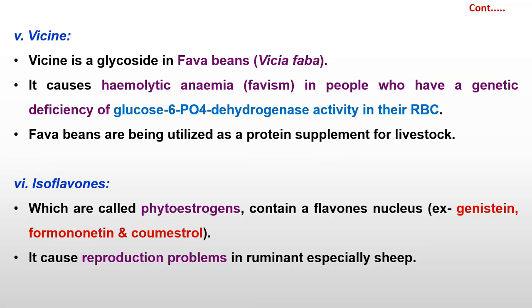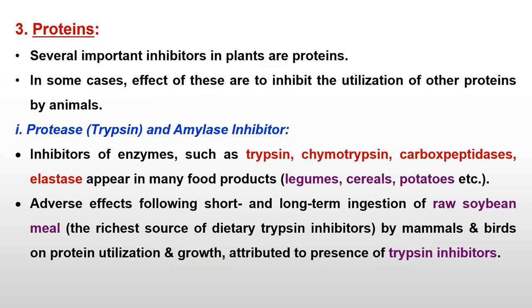Next is isoflavones, which are called phytoestrogens. They contain phytoestrogens, and an example of phytoestrogens is genistein. These are the best examples of phytoestrogens, and they cause reproductive problems in ruminants, especially in small ruminants like sheep. They affect the reproduction cycle.